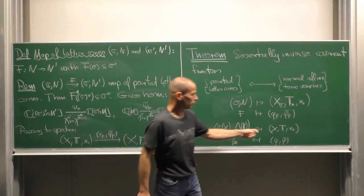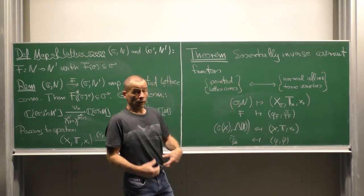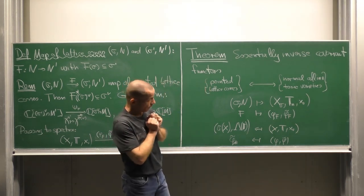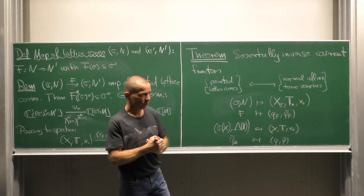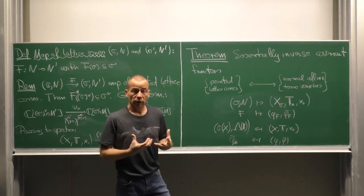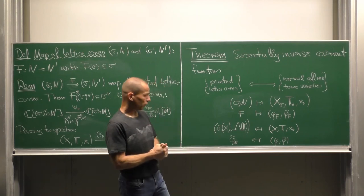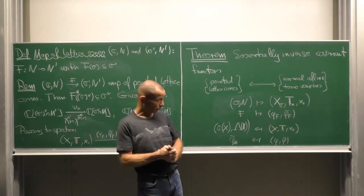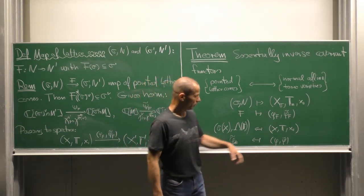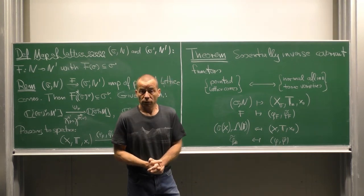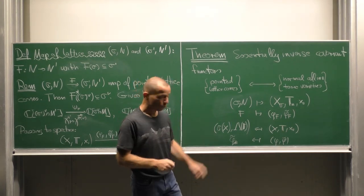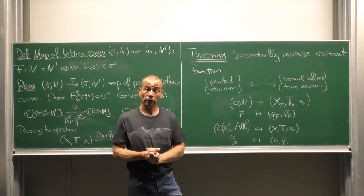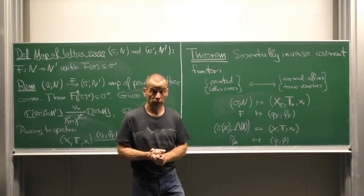And the way back is the following. If you have an affine toric variety, then we know that this X has a unique limit point with closed torus orbit, and we send it to the convergency cone of that point. And this is a lattice cone in the lattice of one-parameter subgroups of T. And if you have a toric morphism phi, phi tilde, then we send it to the push forward of one-parameter subgroups via phi tilde. See you in the next clip.